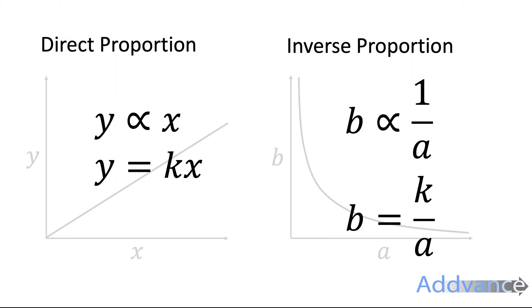So whenever you see a direct proportion, that's something is equal to a multiple of something. For inverse proportion, something is equal to something divided by something.